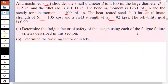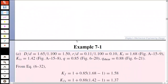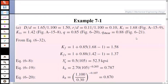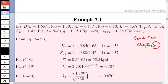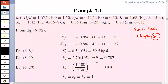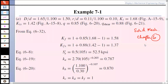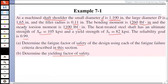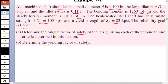We need to determine the fatigue factor of safety using each of the fatigue failure criteria discussed in the last class, and also determine the yield factor of safety. The first thing you would do is go to your solid mechanics formulas in chapter 6 to determine the notch sensitivity factor and the stress concentration factor. From the given data — the larger diameter, smaller diameter, and the fillet radius r of 0.11 inches — we have the information we need.